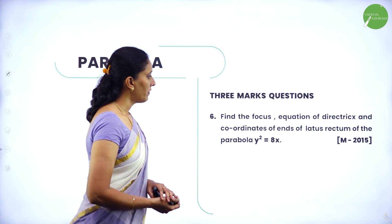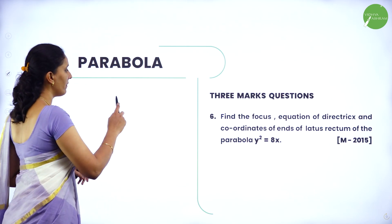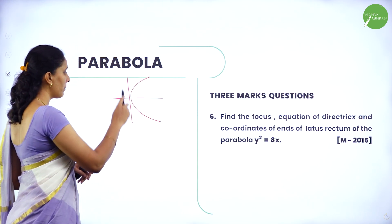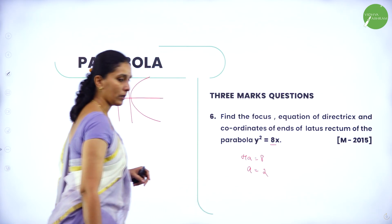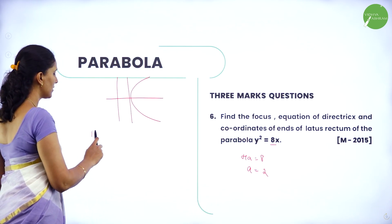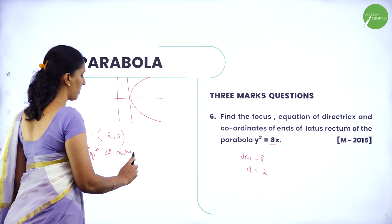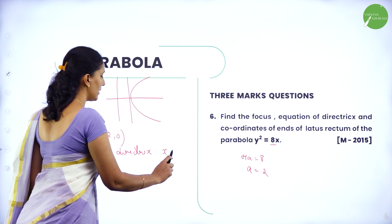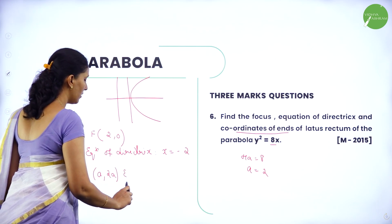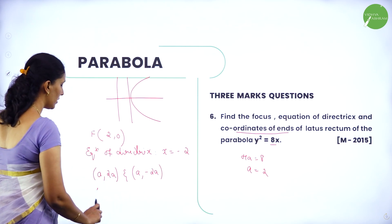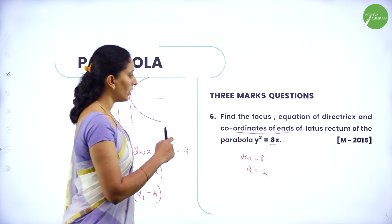Three-mark question: find the focus, equation of directrix, and coordinates of the ends of latus rectum of the parabola y² = 8x. This is a right-hand parabola. From the equation, 4a = 8, so a = 2. Focus = (2, 0). Equation of directrix: x = minus 2. The coordinates of the ends of latus rectum are of the form (a, 2a) and (a, minus 2a), so they are (2, 4) and (2, minus 4).